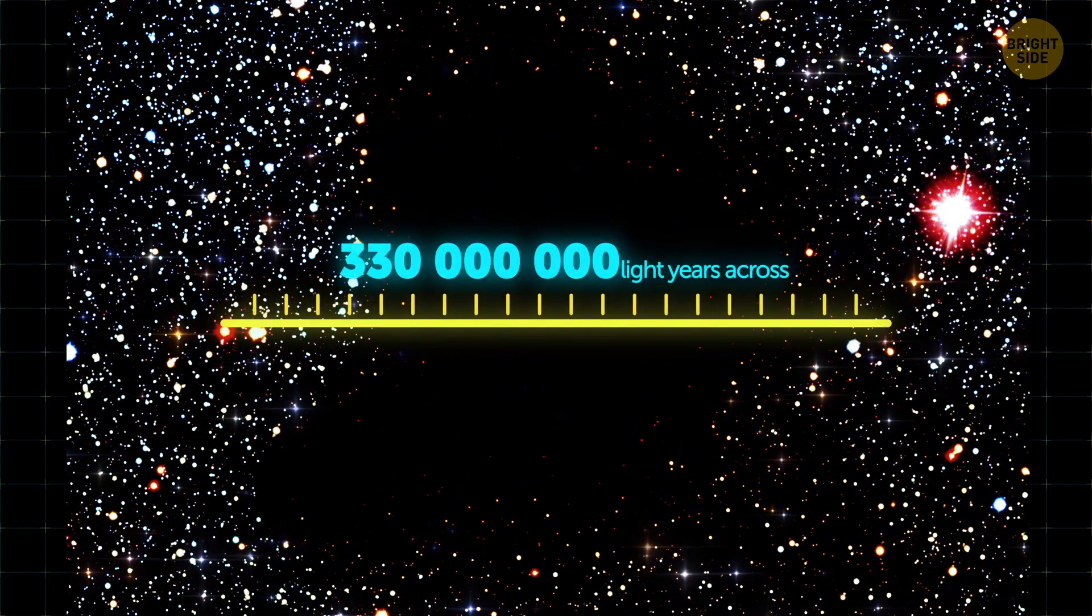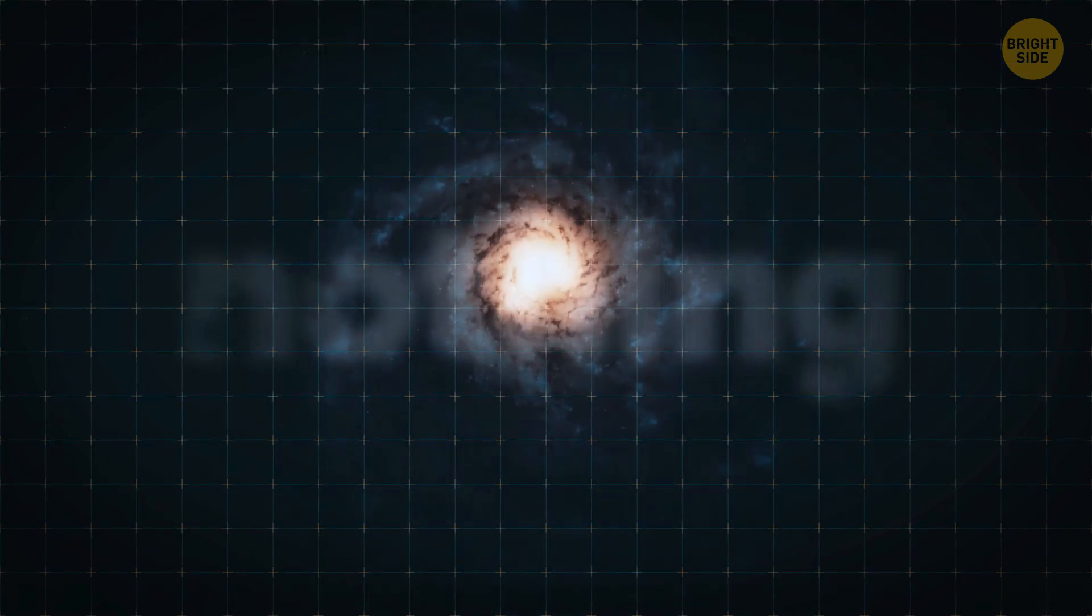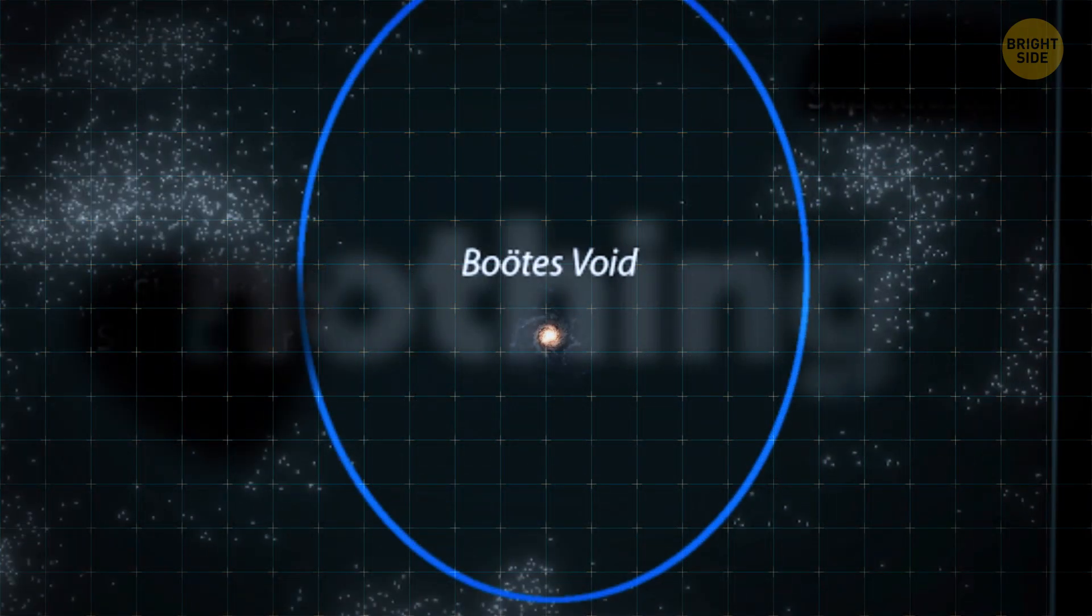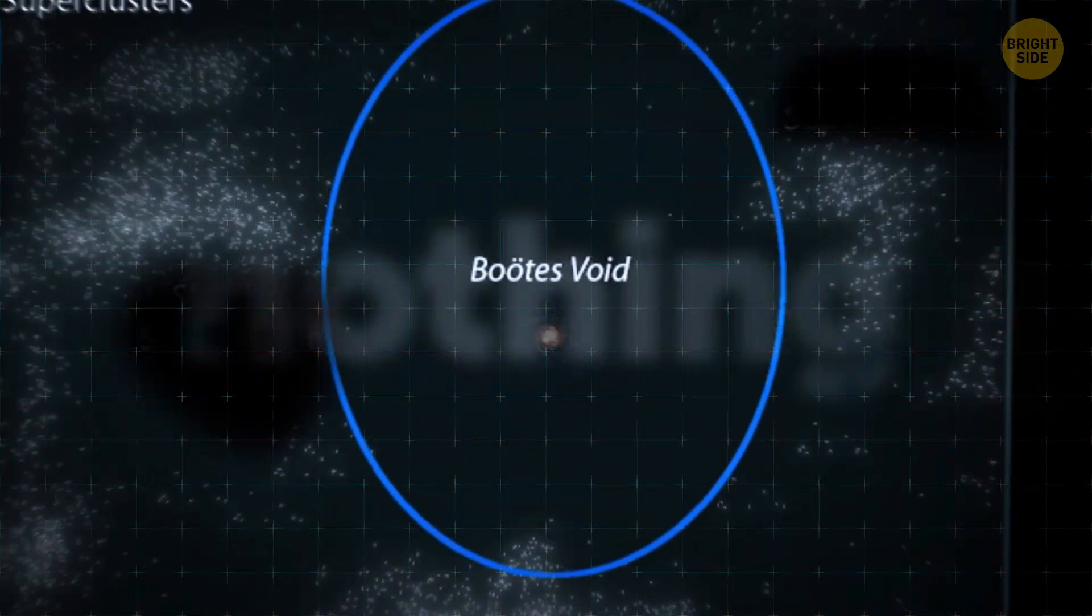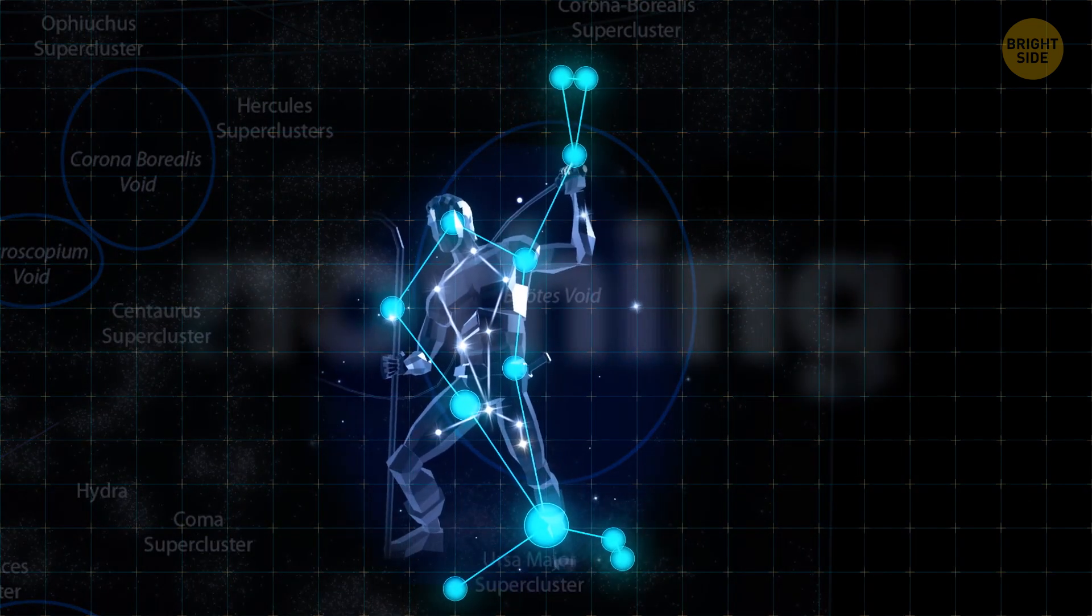The void is a roughly spherical region about 330 million light-years across. Our home Milky Way galaxy could fit there billions of times over. That's the mysterious Boötes Void. It lies in the constellation of Boötes, the herdsman driving the plow around the North Pole.